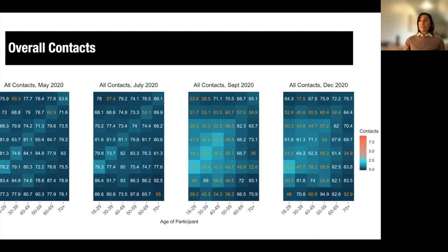The numbers in each tile represent the percent reduction in contacts compared with the POLYMOD study. Disease modeling done early in the pandemic had shown we needed to maintain a reduction of around 60% of contacts from pre-pandemic times to prevent a resurgence. Numbers in orange represent contact levels at which a COVID-19 resurgence was expected. In May and July, respondents reported few contacts — around 80% reduction from pre-pandemic times. In September, every age group had crossed that threshold for at least some contact age groups. By December, fewer contacts were reported, possibly reflecting individuals reducing contacts due to perceived risk and renewed restrictions during the second wave.